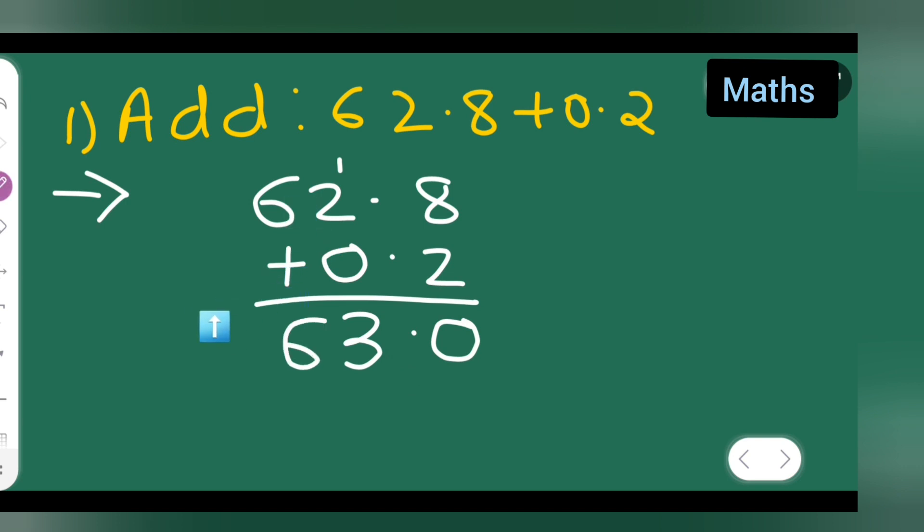So your answer is 63, right? So therefore you all can say that 62.8 multiplied by 0.2 is equal to 63 is your answer.